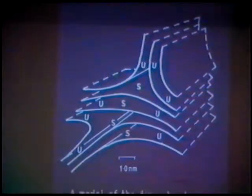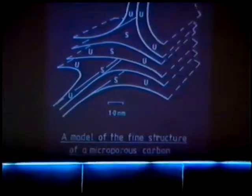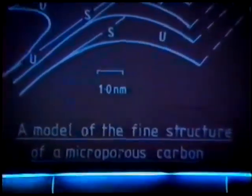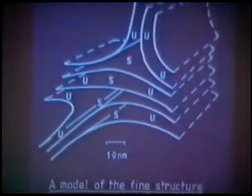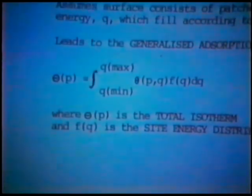This is a simple sketch of the sort of micropore space you'd get in that type of model, where the S's and U's refer to the subclassification of micropores. Such a structure is highly disordered, and it's appropriate to consider the extent to which the heterogeneity of this adsorbent influences the adsorption process.